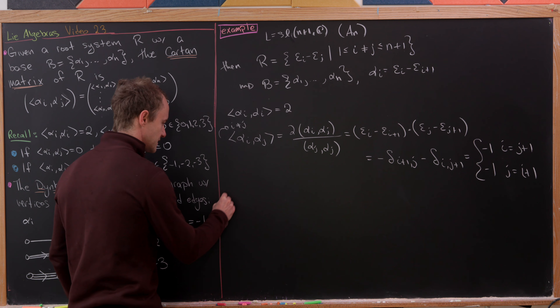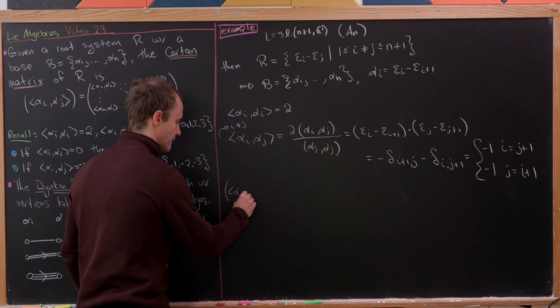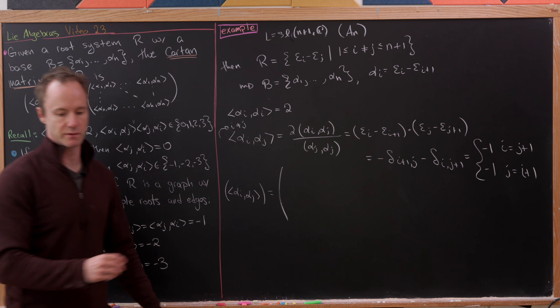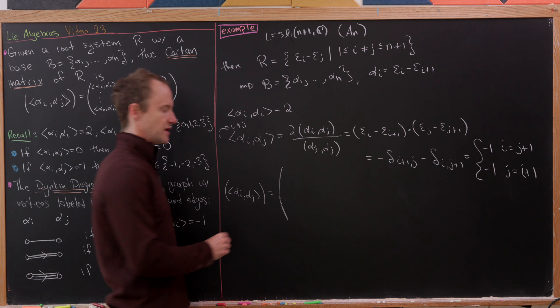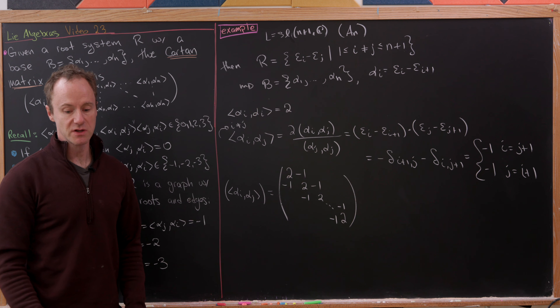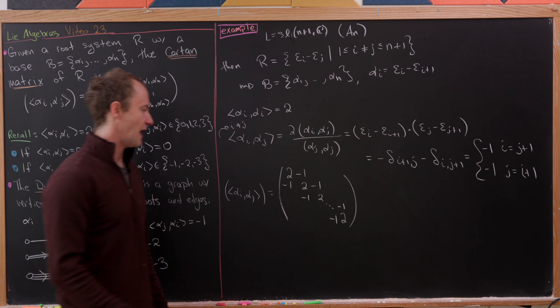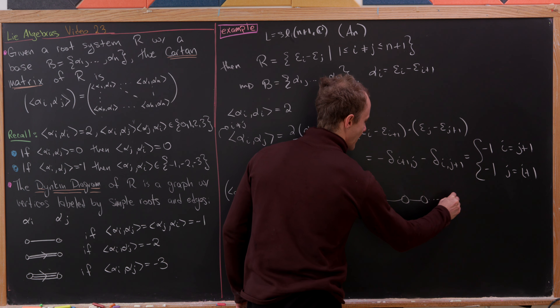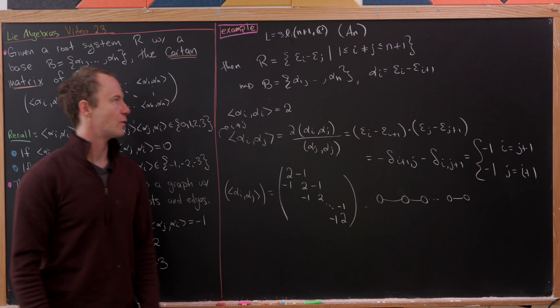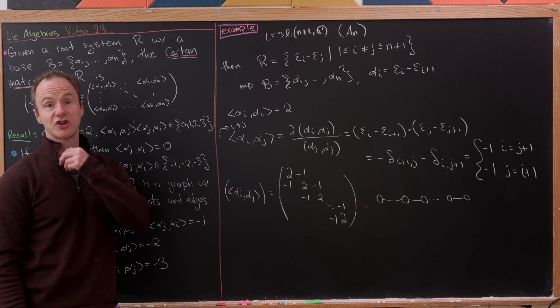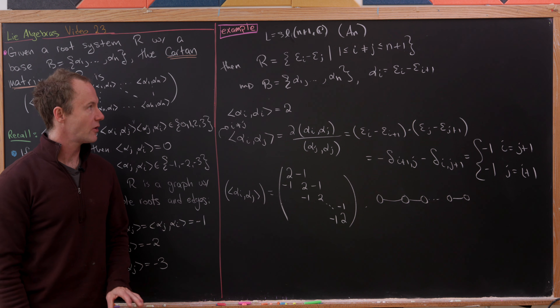So that tells us that the Cartan matrix has the following form: 2 on the diagonals, and on the sub and super diagonals we have minus 1. And then the Dynkin diagram is just this very simple graph with n vertices, all connected in a line.